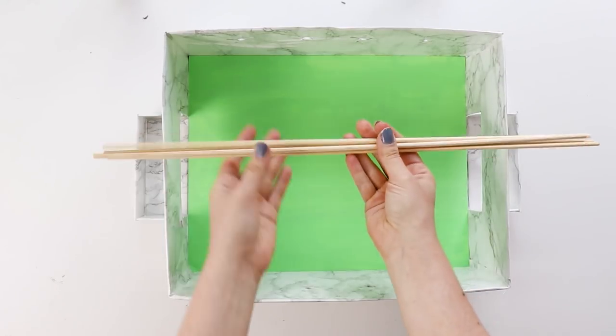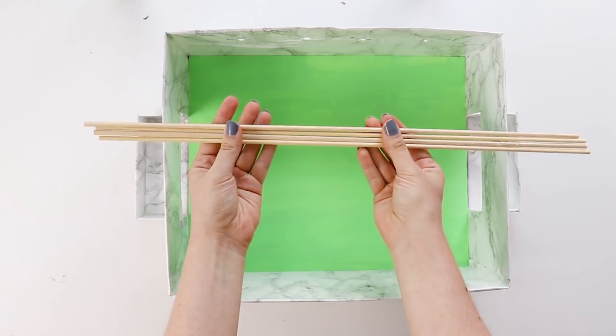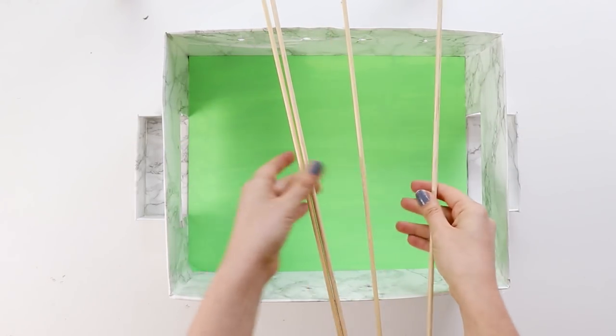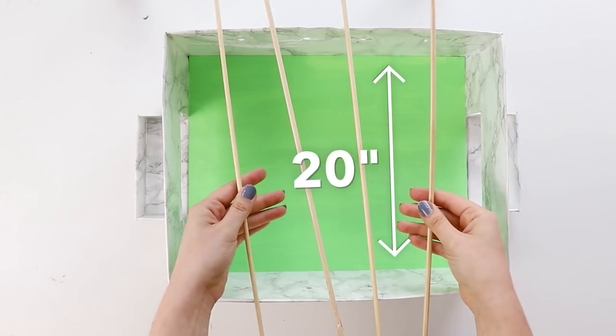Now it's finally time to assemble the foosball game. Cut four dowels down to about double the width of your box. Mine measured 20 inches.